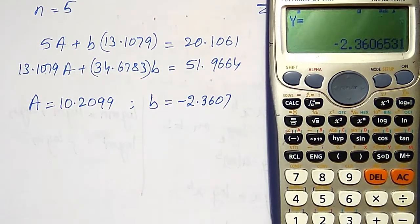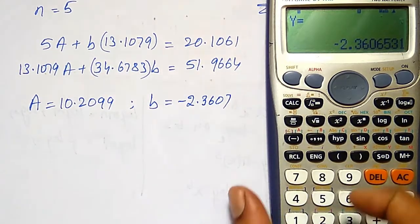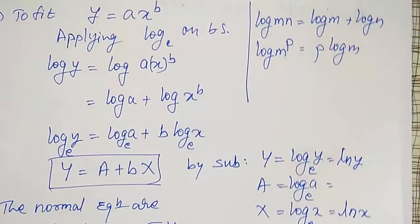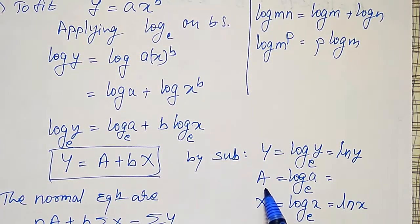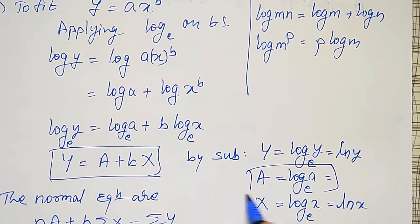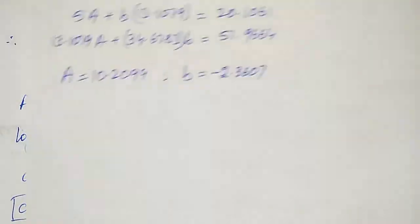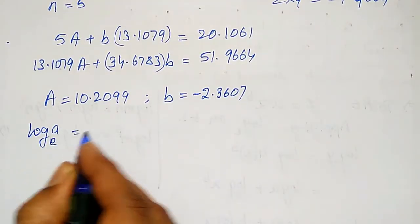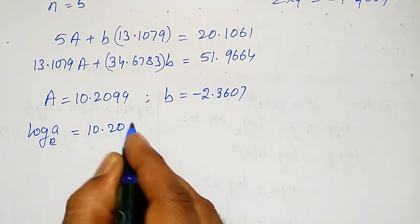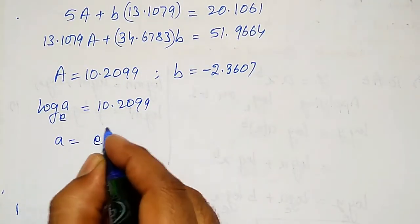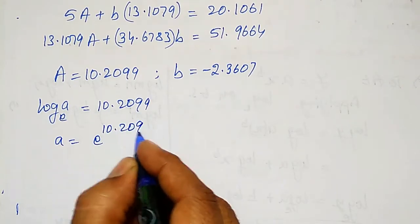I don't want capital A — I want small a. Since capital A = log(a) to base e, I use: log(a) base e = 10.2099, therefore small a = e^10.2099.